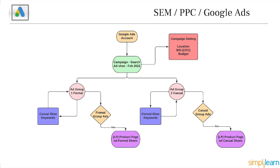I open two ad groups under one campaign because I'm selling two kinds of products: formal shoes and casual shoes. If I had created just one ad group and inserted all keywords for both formal and casual into it, then when somebody searched 'formal black shoes,' the ad group would get confused — should it show a formal shoes ad or a casual shoes ad? All mixed keywords like formal, casual, cricket, shopping, jogging, party, office would be in the same ad group, and it would randomly show either.